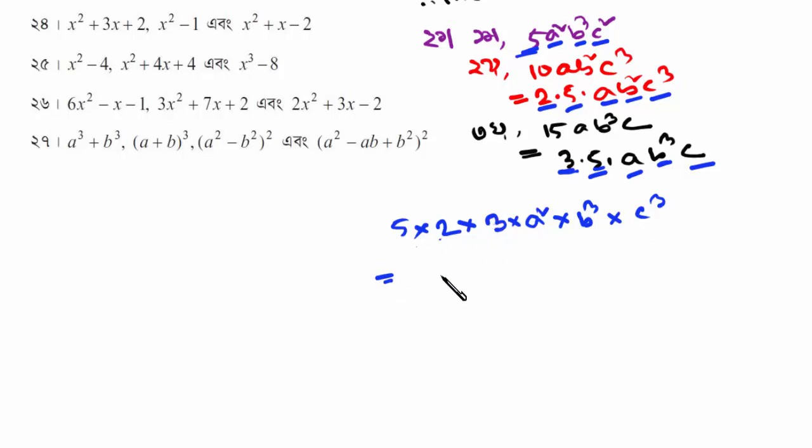So this is equal to 5 into 10. 3 is equal to 15. So the LCM is A squared B cubed.